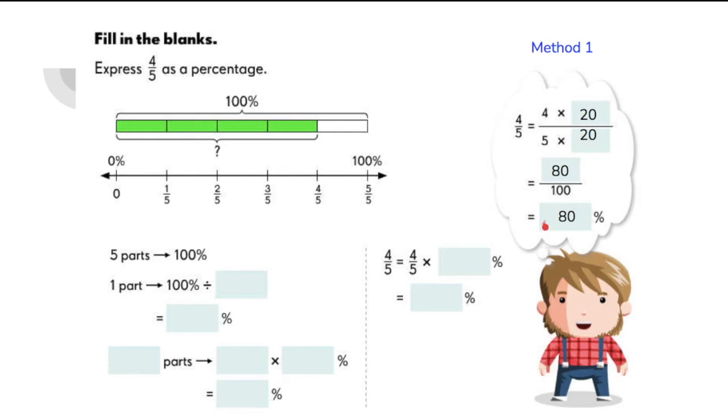Let's see if we will get the same answer using the second method or using the diagram. Here, the whole model, the whole bar is equal to 5 parts or 5 segments. Remember, if we want to express 4 fifths using a bar model, the denominator tells us how many parts the whole should be divided into. That's why we have 5 segments here.